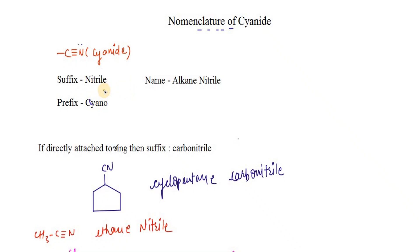When it is a suffix, we use nitrile. When it is a prefix, we use cyano. When it is a suffix, we use alkane nitrile. And if it is directly attached to the ring, then as a suffix we use carbonitrile.